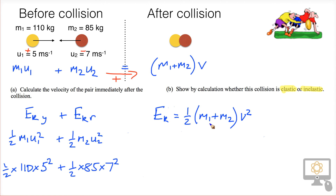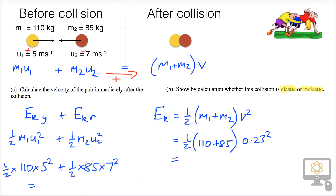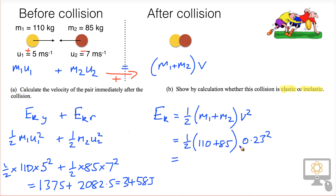We compare that to the kinetic energy after the collision: one-half times the total mass of 110 plus 85, times the velocity squared after the collision, which is 0.23 squared. Calculating both sides: before the collision we get 1,375 plus 2,082.5, giving a total kinetic energy of 3,458 joules. After the collision, the total kinetic energy is just 5.16 joules.